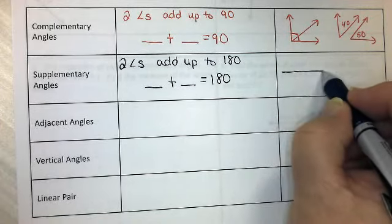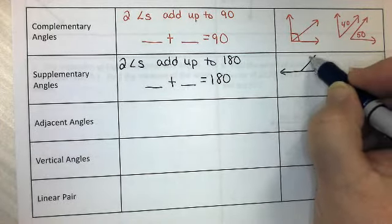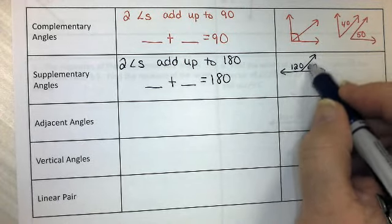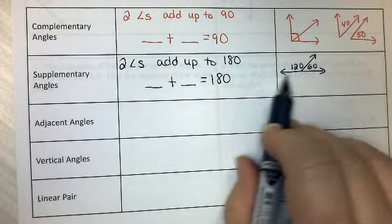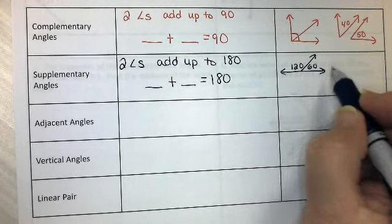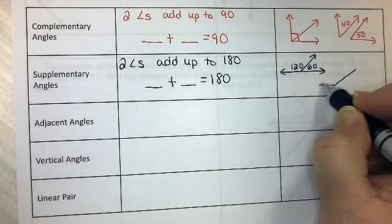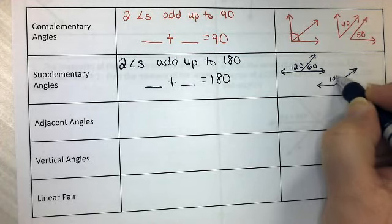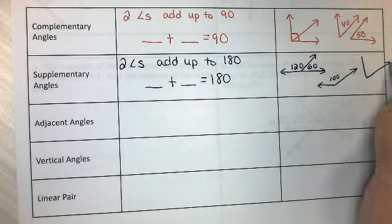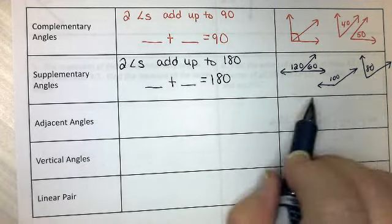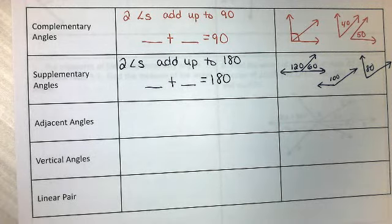And these could look like this, where we have them next to each other, they're connected, they're adjacent, and they make a line. So that adds up to 180. Or they could be totally separate from each other. We could have one angle that's 100, and then an angle over here that's 80. And because those add up to 180, they are supplementary.